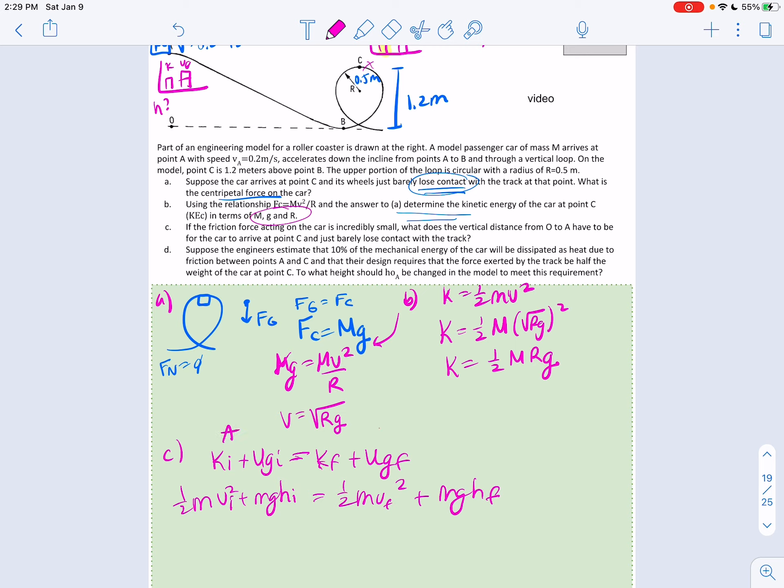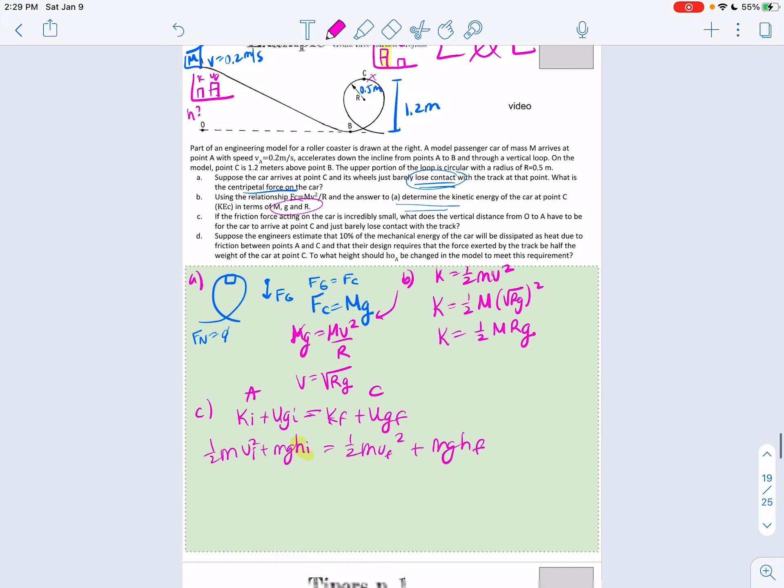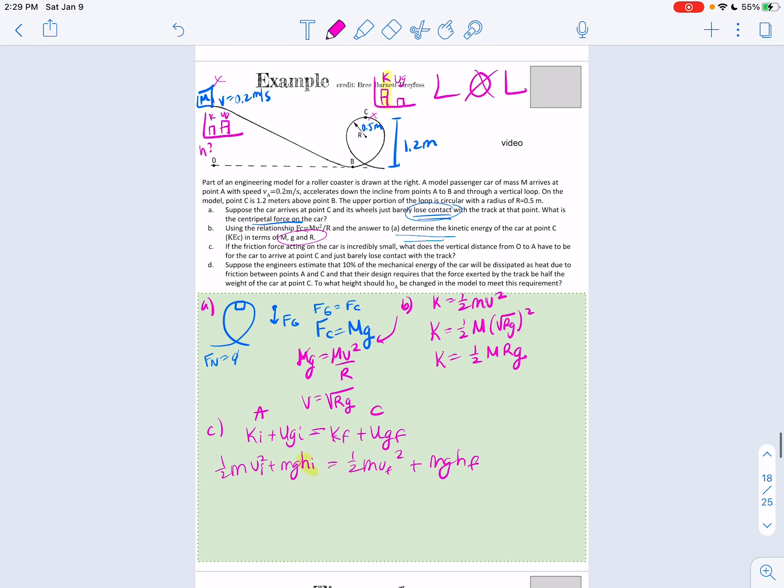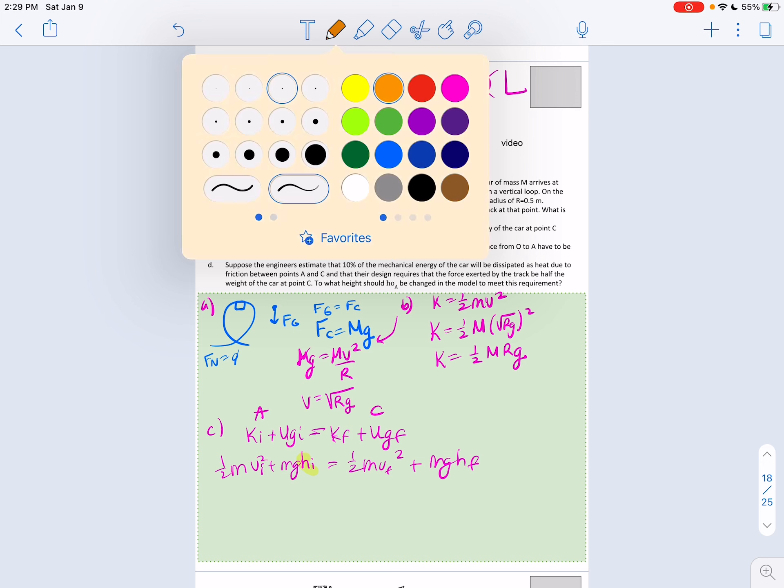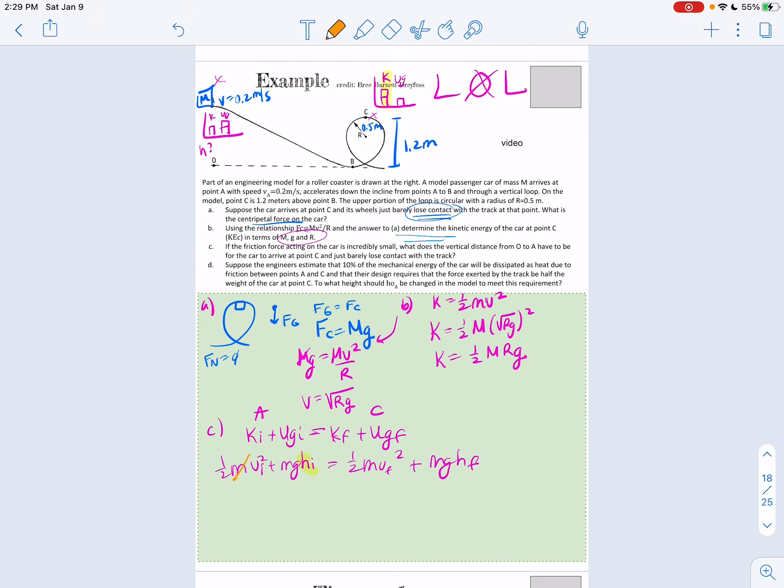So one-half MV squared plus MGHI equals one-half MV final squared plus MGH final. So remember, this is at point A, this is at point C. This is what we're looking for, the height at point A. So usually I like to switch around and solve for the variable, but in these sometimes that's just way too complicated, so then I'll just start putting some stuff in now. So one thing you want to notice that they haven't given us M. But M is in every term. Which will always happen unless there's springs involved, then that one is not mass dependent, so you will have to keep it. But anything else, if there's all M's across the board, just cancel them out.